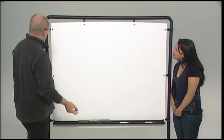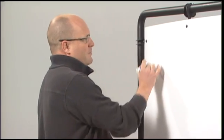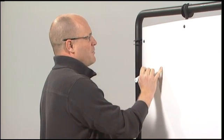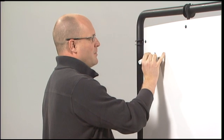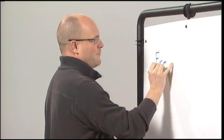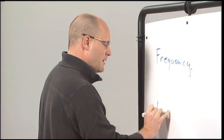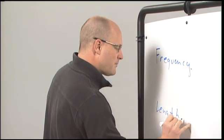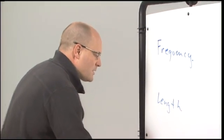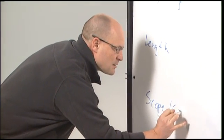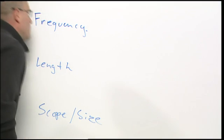So what are those topics? At the broadest level, when you think about availability, this sort of breaks down into three important things you really need to think a lot about. The first one, frequency. Another one is the length of an outage. And finally, there's the scope or size of an outage.